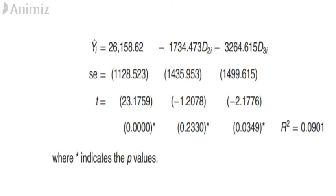So as you can see from this regression, the estimated slope coefficient for the North region is not statistically significant as its p-value is greater than 0.05, whereas that of the South is statistically significant as the p-value is only 0.035. So we can conclude that statistically the mean salaries of public school teachers in the West and the North are about the same, but the mean salary of teachers in the South is statistically significantly lower by about $3,265.